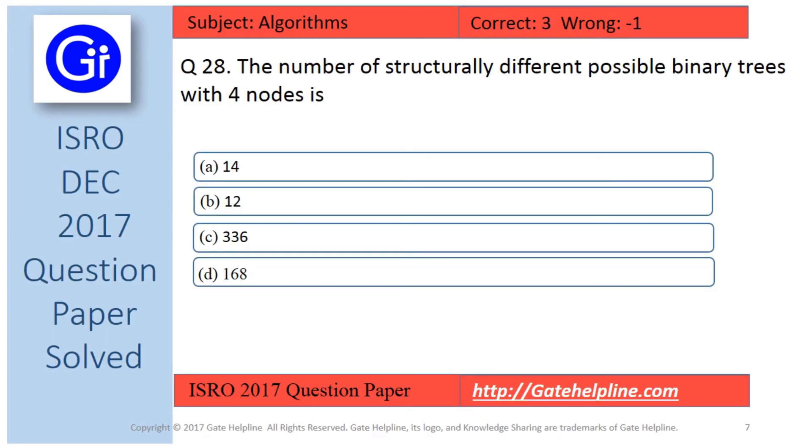So friends, as per our discussion, answer to this question is option a, that is 14 number of structurally different possible binary trees are possible with 4 nodes.